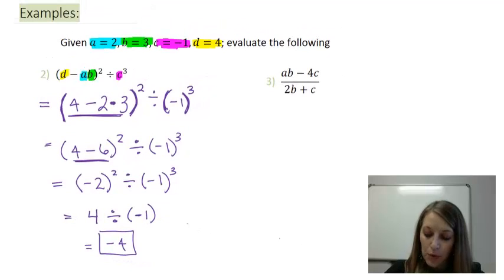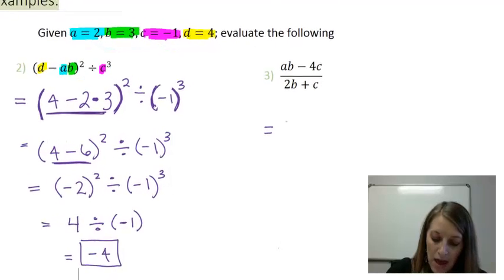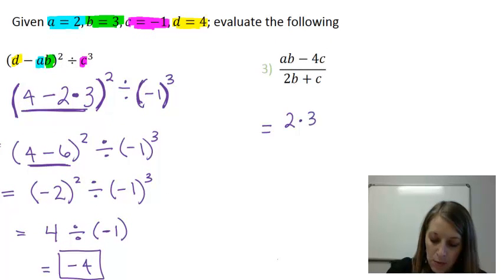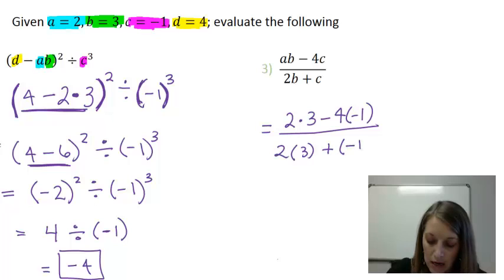Switching over to example 3, same thing. There's a fraction involved. Just focus on inserting the numbers correctly and follow your rules of order from there. So first I have A, which is 2, times B, which is 3, minus 4 times C, which is negative 1, all over 2 times B, which is 3, plus my C, which is negative 1.